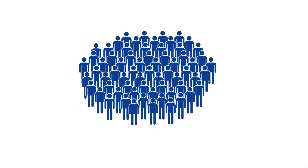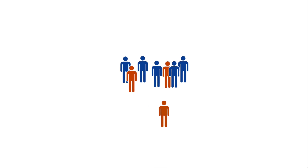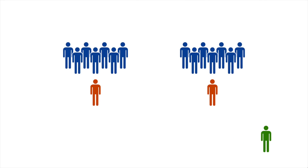At first, one person is sick and everyone else is susceptible. A sick person — maybe they don't even realize yet that they're sick — meets a bunch of people during the time in which they're contagious. Maybe they go to work and interact with colleagues, maybe they have dinner with extended family. This sick person goes on to infect some fraction of the people they meet, and they become sick. The sick person recovers and becomes immune, but the new sick people go on to infect others. The number of people that a sick person typically infects is known as R0, the basic reproductive number of the disease.